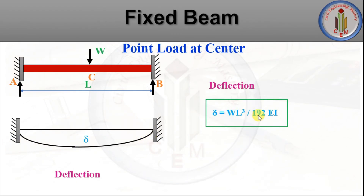Next, deflection. The deflection formula for a fixed beam with a central point load is: δ = WL³ / 192EI, where W is the load, L is the length of the beam, E is Young's modulus, and I is the moment of inertia.